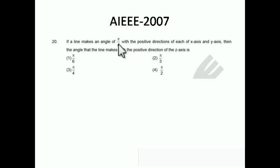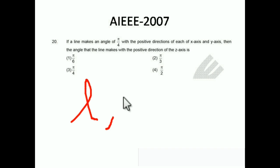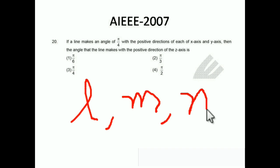Last one: if a line makes an angle of π/4 with the positive direction of each of the x-axis and y-axis, find the angle the line makes with the positive z-axis. We know the direction cosines: l = cos(α), m = cos(β), n = cos(γ). They gave us α = π/4 and β = π/4, so l = 1/√2 and m = 1/√2. We also know that l² + m² + n² = 1.